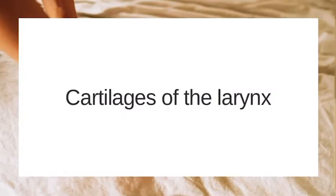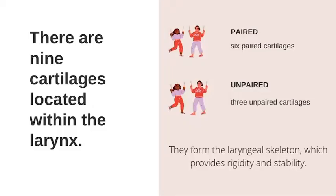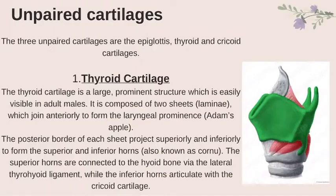Cartilages of the larynx: there are nine cartilages located within the larynx — three paired cartilages and three unpaired cartilages. They form the laryngeal skeleton which provides rigidity and stability. The three unpaired cartilages are the epiglottis, thyroid and cricoid cartilages.